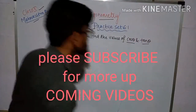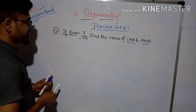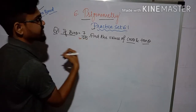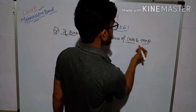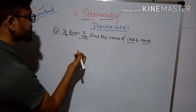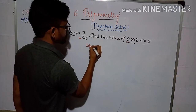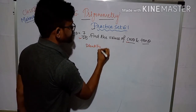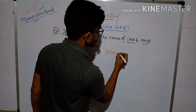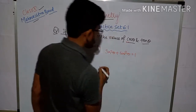The value of sin theta is 7 by 25, which is given. We have to find the value of cos theta and tan theta. We will use the identity: sin square theta plus cos square theta is equal to 1.